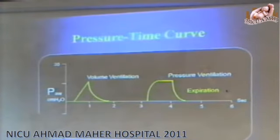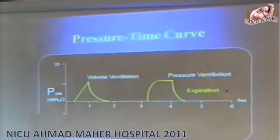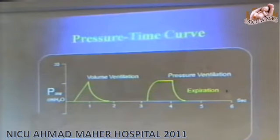Then came newer hybrid modes like volume guarantee, which combine pressure with volume control. The concern is that a baby with RDS has poor compliance, but then receives surfactant or starts producing its own — compliance improves. If you set the ventilator and walk away, the baby will receive very different volumes as lung mechanics change. Volume guarantee allows the ventilator to wean automatically as compliance improves, reducing the need to be constantly at the bedside adjusting settings.